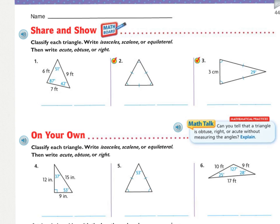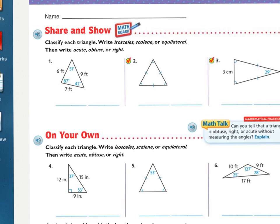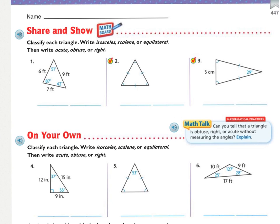On your Share and Show, you are to classify each triangle. Write isosceles, scalene, or equilateral based on the length of their sides, and then acute, obtuse, or right based on the measure of their angles. Press pause and work.